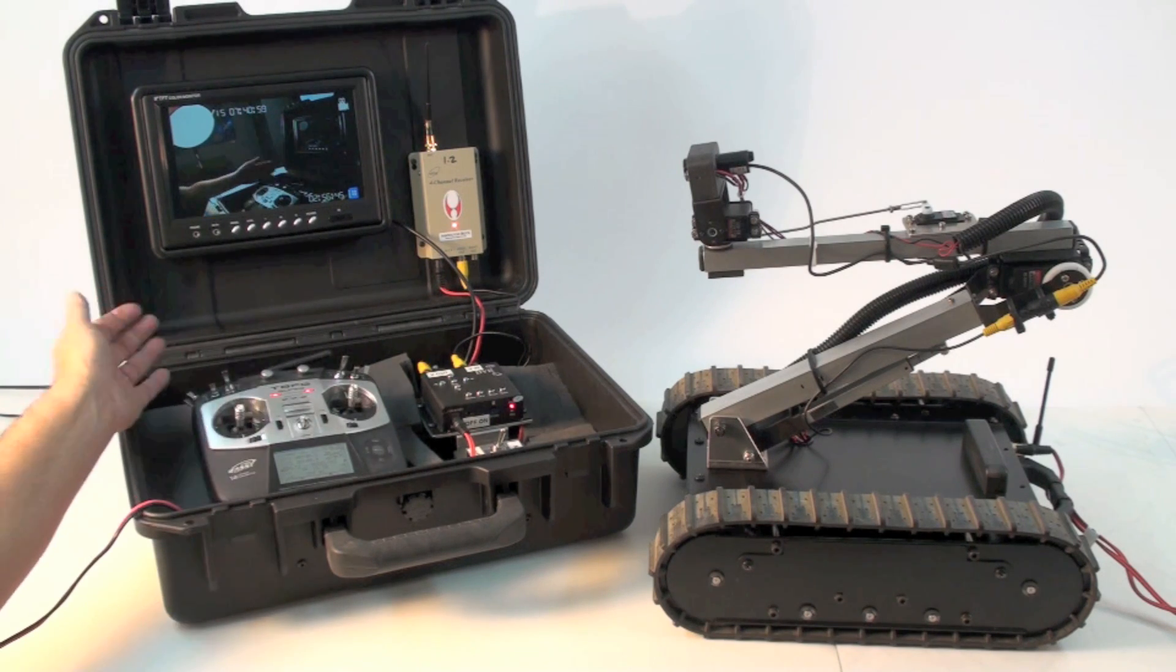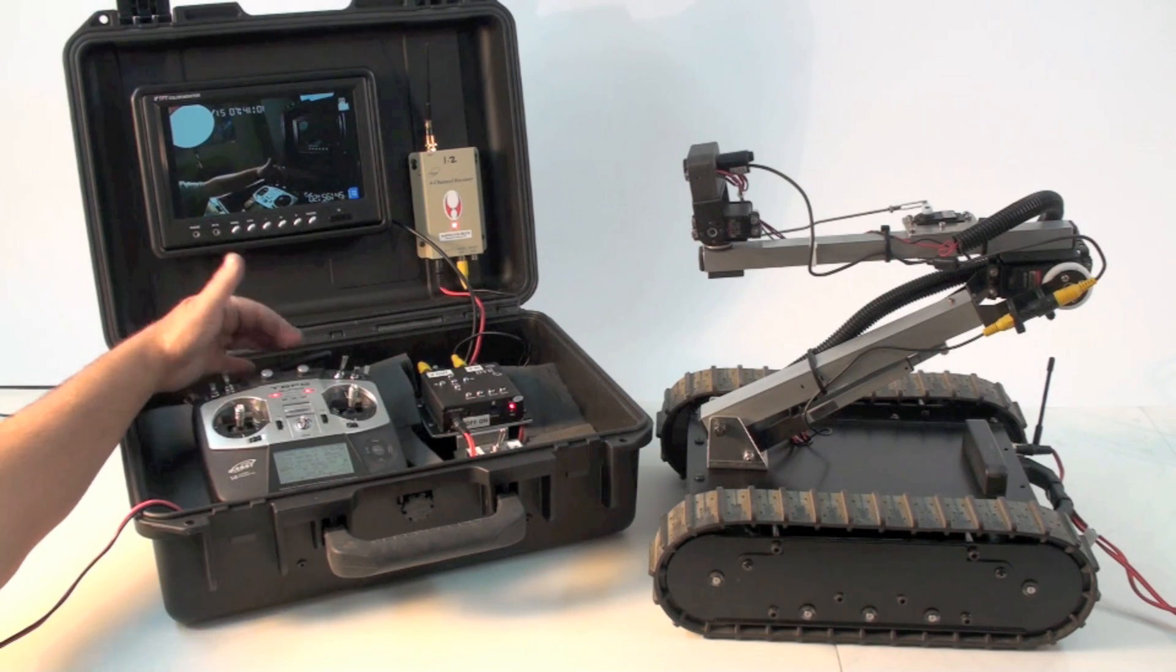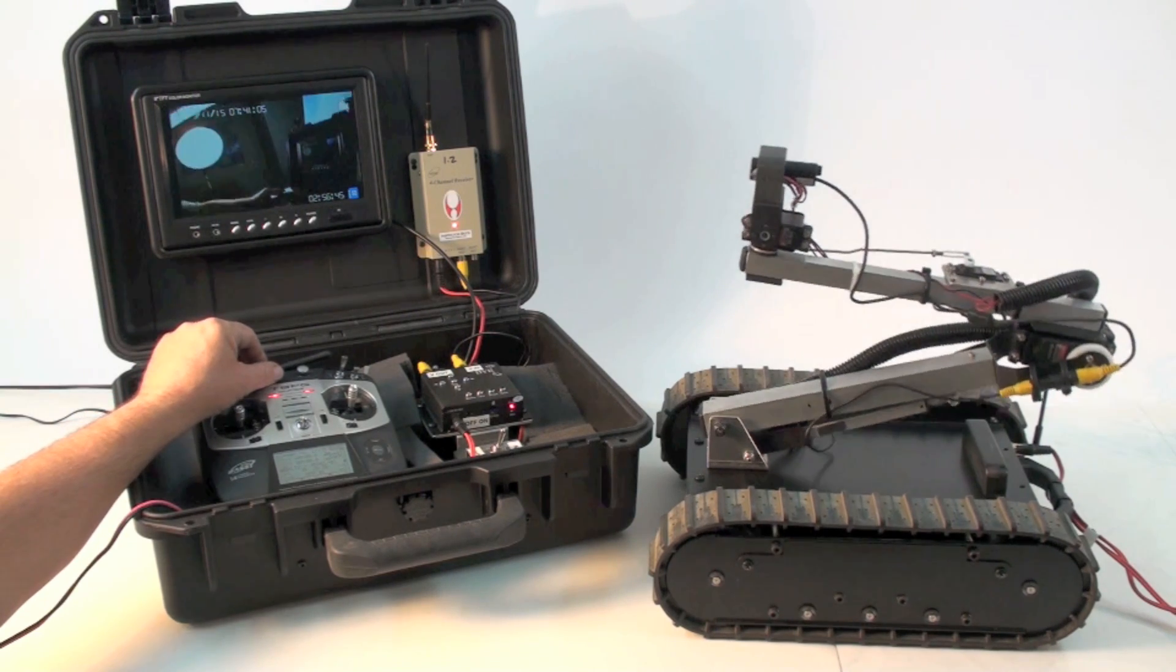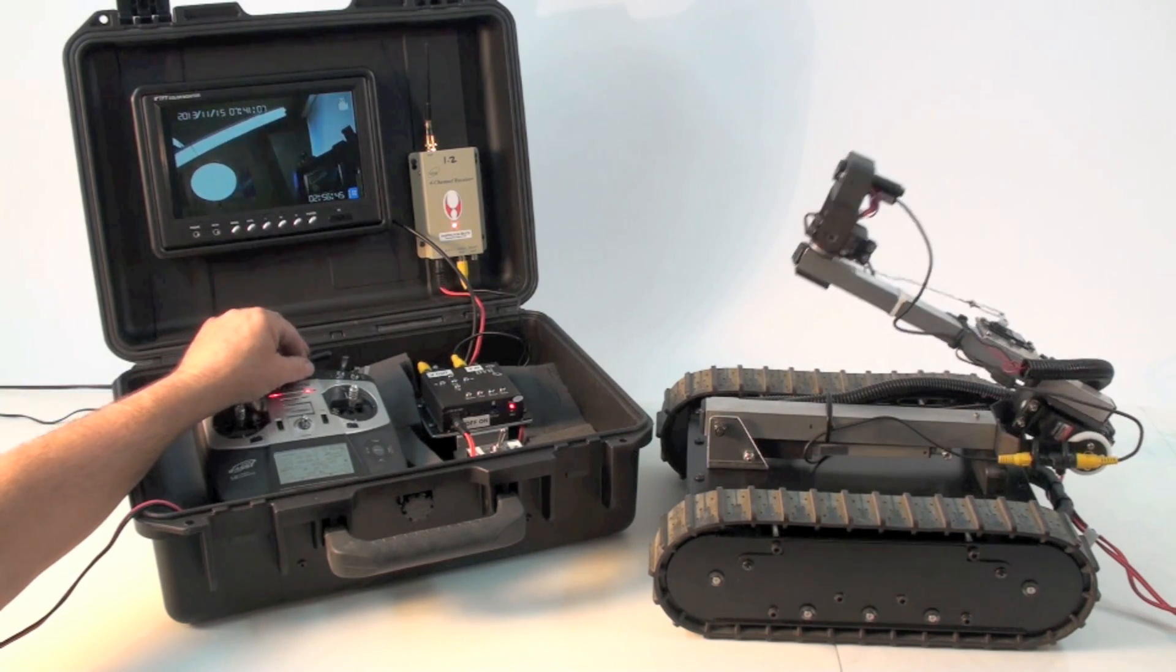The arm is controlled by these two knobs, the left and the right. The left one controls the lower arm, and the right one controls the upper arm.